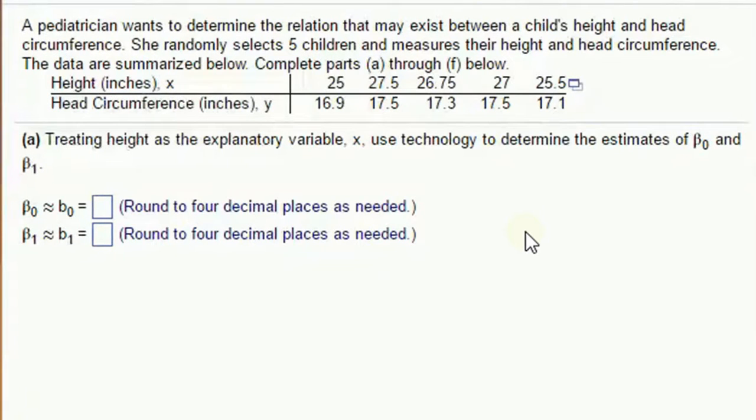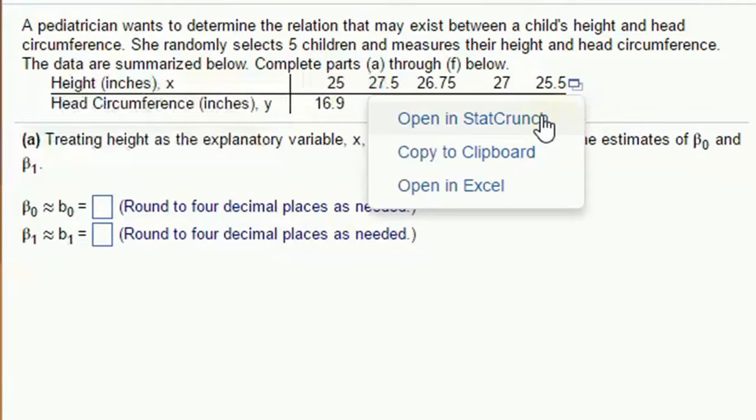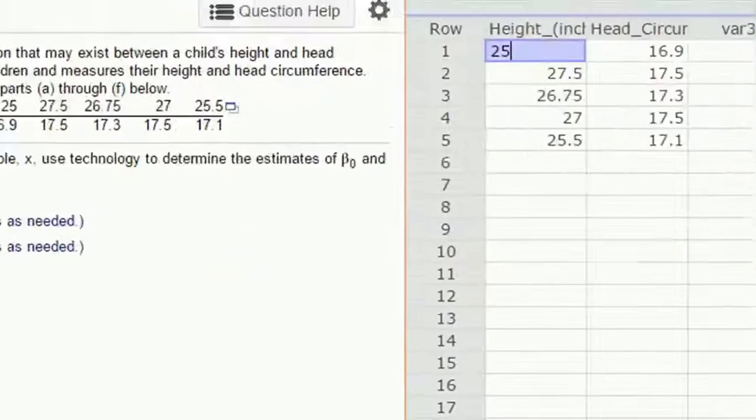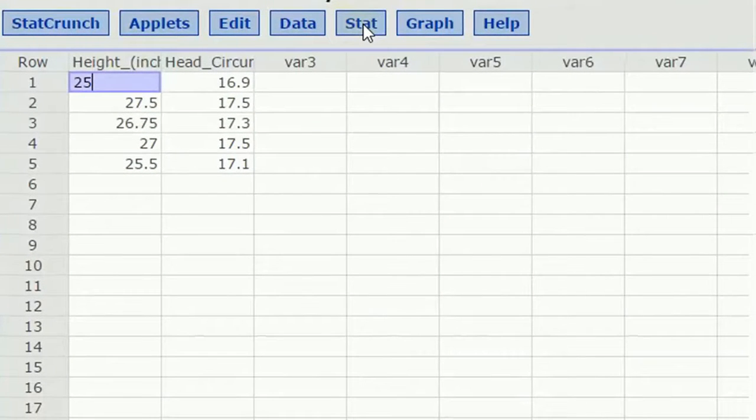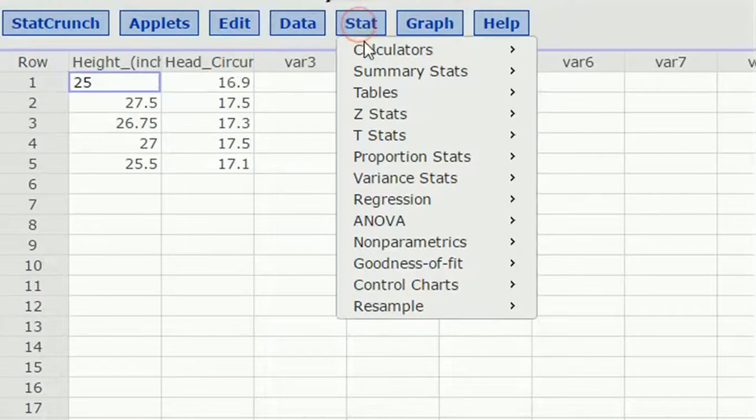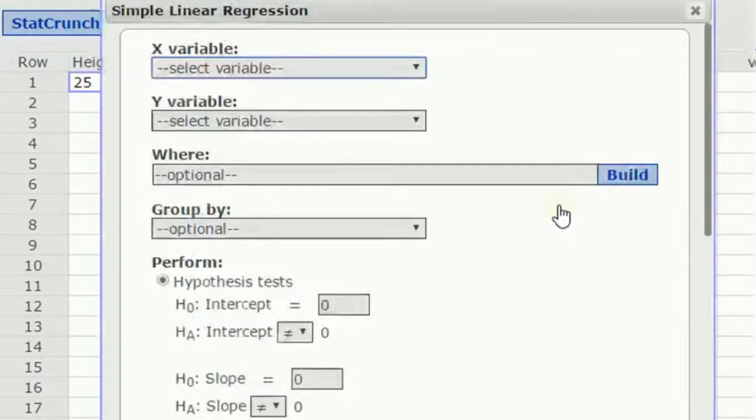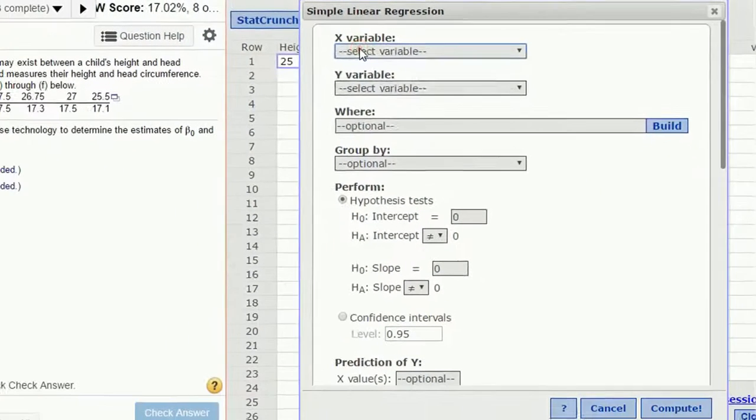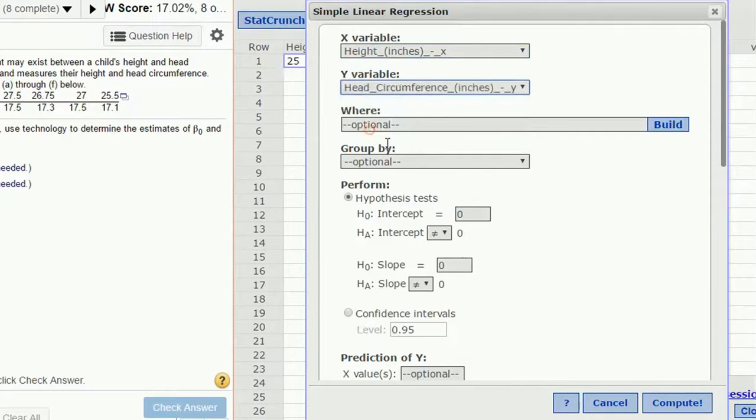Okay. So once again, we got some data. A pediatrician wants to determine the relation that may exist between a child's height and head circumference. She randomly selects five children, measures their height and head circumference. Okay. So we've got height and head. Let's open this in StatCrunch. And we'll do another linear regression. We're going to pull up the regression menu for simple linear.